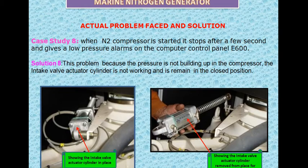The function of the intake actuator is to keep the valve closed during the start of the compressor so that too much load does not come on the compressor and the starting current is less. Once the motor starts and builds up, this actuator needs to be opened for the air intake — only then will the pressure build up.